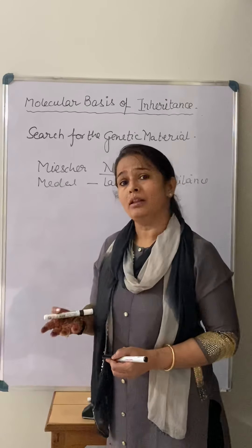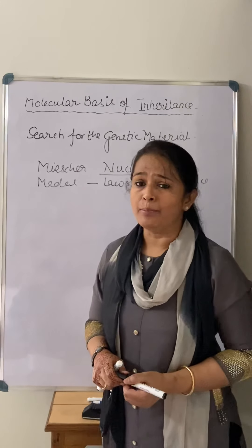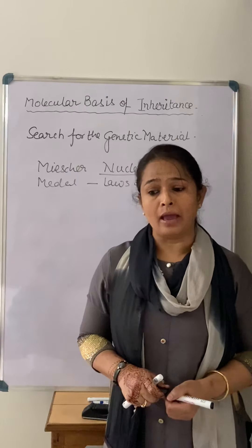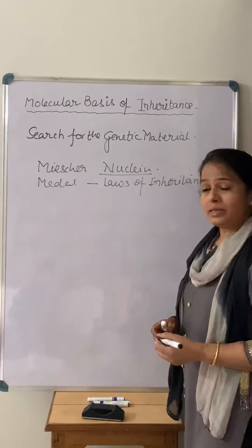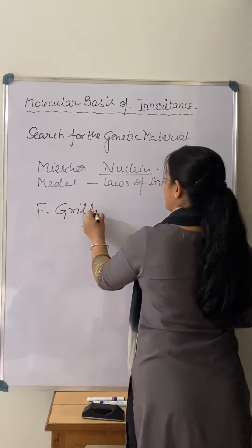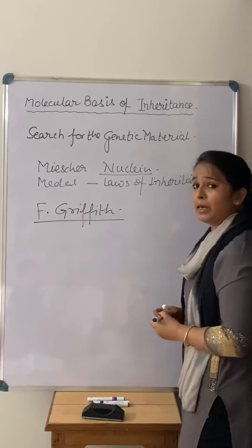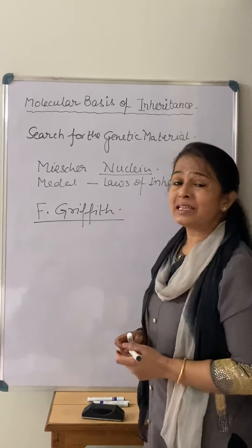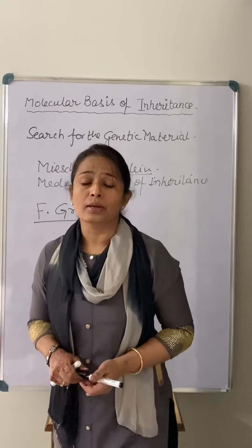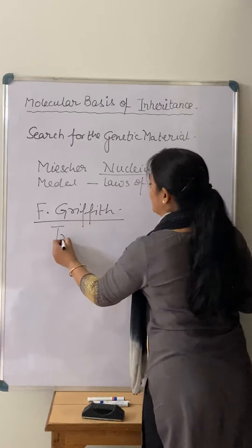That discovery was around 1866-1869, and gradually with time the research reached the molecular level of inheritance. There was a person named F. Griffith who first performed an experiment to find out what material is passed from one generation to the next, or from one cell to another. That experiment is known as the Transforming Principle.